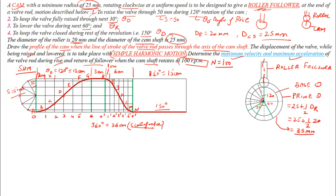Each division of the angle of ascent is 20° (120° ÷ 6), and each division of the angle of descent is also 20° (wait — 60° ÷ 6 = 10°, but described as 20° for ascent). Label all division points. From the displacement diagram, measure the distances 1-to-B, 2-to-C, 3-to-D, 4-to-E, and so on up to the corresponding points.